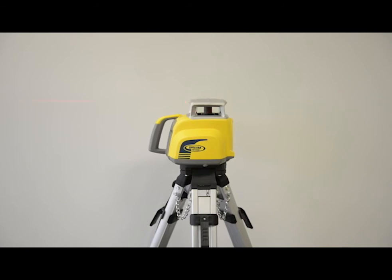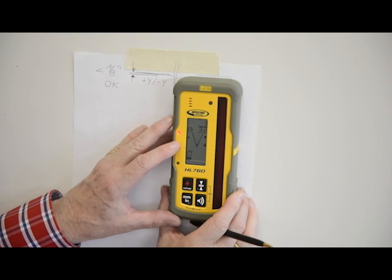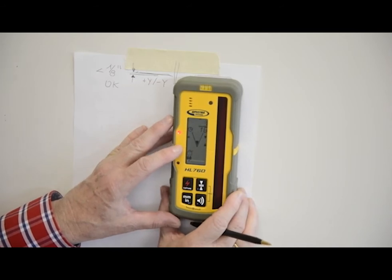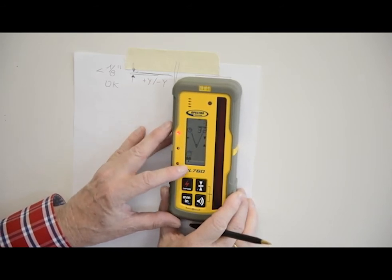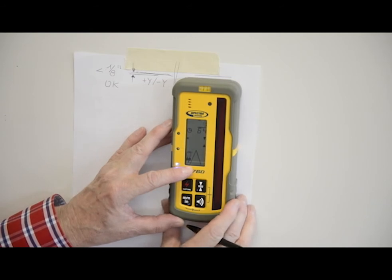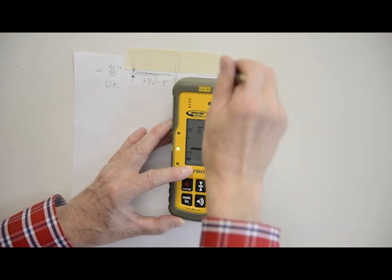Once you've made the mark for the plus X axis, rotate the laser again 180 degrees minus X axis toward the wall. Allow the laser to re-level and make the next mark at the wall.